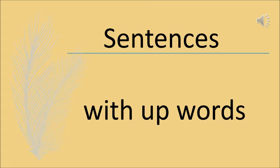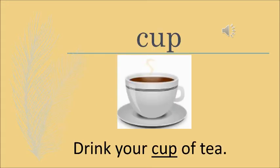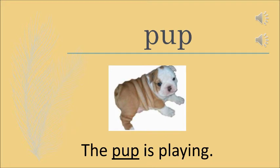Now we'll see a few sentences with these words. The first word is cup, and the sentence is: drink your cup of tea. Next is pup — pup is a small dog, so the sentence is: the pup is playing. So we have seen the meaning of the words and how these words can be used in a sentence.